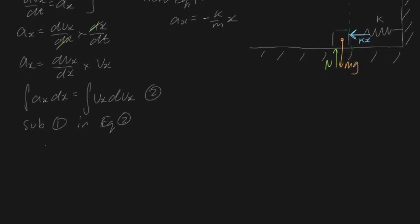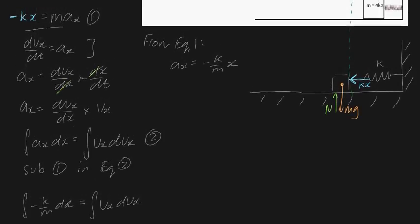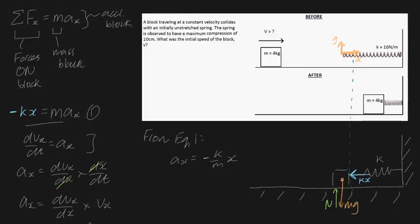We're left with the integral of minus k/m times x dx equals the integral of v_x dv_x. Now we need to evaluate the definite integral using boundary conditions. Looking back at our picture: when the block first contacts the spring, the spring is unstretched so x₁ equals 0, and the block is traveling at constant velocity so v₁ equals v — the velocity we're trying to find.